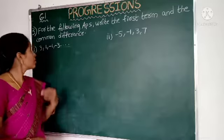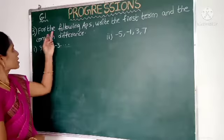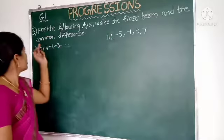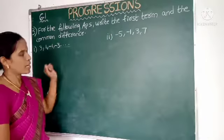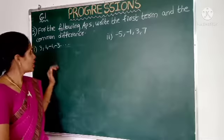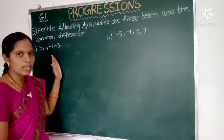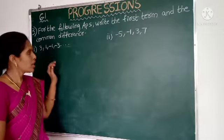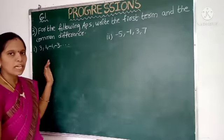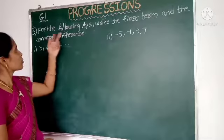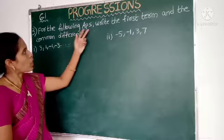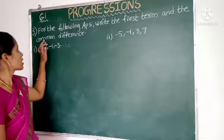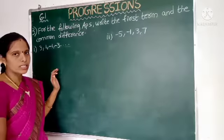See the third portion. For the following APs, write the first term and common difference. What are you given? In this third portion, four questions are there. I am explaining one by one. What are you given? Following APs — write the first term and common difference.